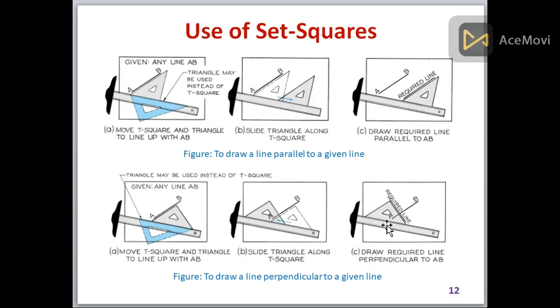You use the set squares in different ways. For example, move T-square and triangle to line up with AB. This is the movement of T-square and set squares. Slide triangles along the scale like this way without displacing this one. Draw the required line parallel to AB. Then this line is drawn and then a parallel line here is also drawn.